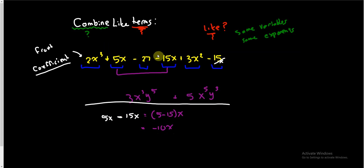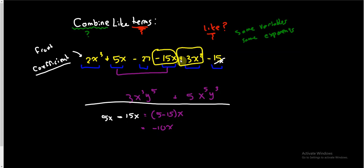An important point: these signs belong to whatever term is right behind them. So when you look at a term, check the sign right in front of it — that sign is part of the term. So 'minus 15x' is the same as 'negative 15x.' The term 3x squared has a plus sign in front, so it's a positive 3x squared. If there's no sign at the very front, it's understood to be positive — so 2x³ is positive 2x³. Make sure you know the sign belongs to the term right after it.